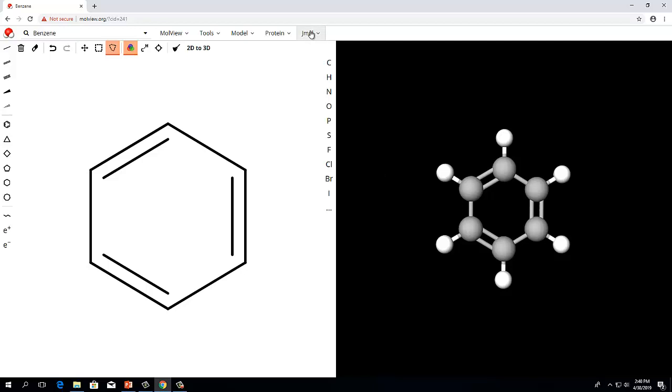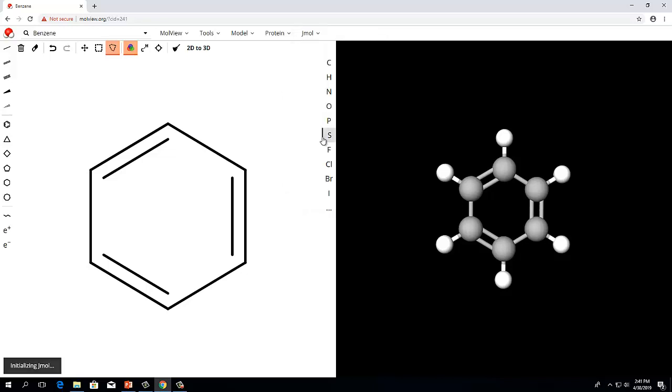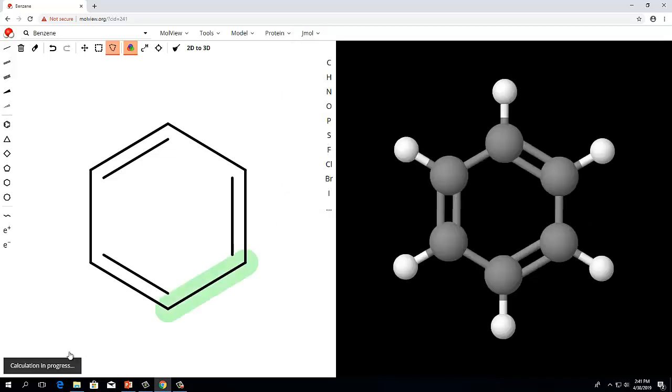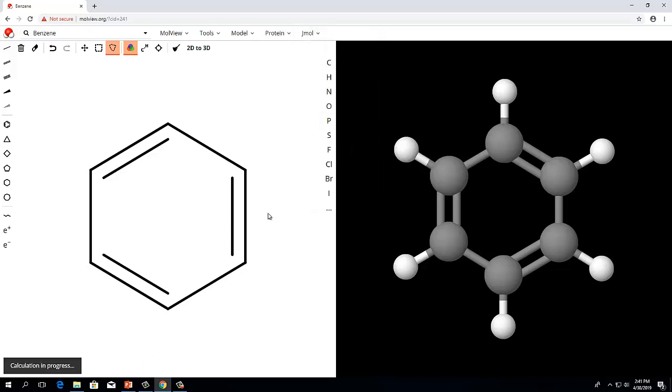Whenever you have opened a new molecule in MoleView, it is a good idea to perform an energy minimization of the structure. This is basically a computational task that finds the molecular geometry that represents the lowest energy. You can find the energy minimization command in the JMOL menu on the upper right. When you choose the energy minimization option, you will see a box in the lower left corner that says calculation in progress, and you should wait for the calculation to finish before proceeding with further analysis.